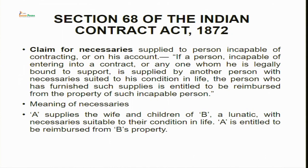We will start with these provisions one by one, sections 68 to 72. If I just help you refresh your memories — when we were discussing the session related to capacity to contract, we had discussed Mohri Bibi versus Dharmadas Ghosh. That was the first time we came across the provision of section 68 during our sessions, because in that case the defendant who was the money lender had tried to claim remedy from the court under section 68 of the Indian Contract Act, but it was denied.